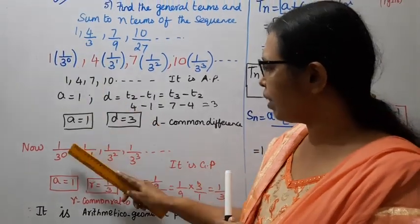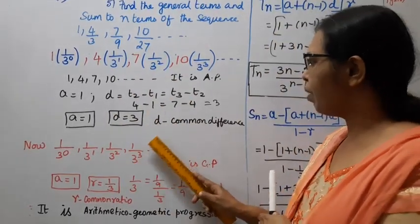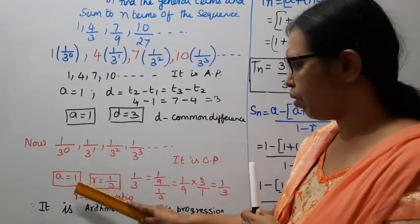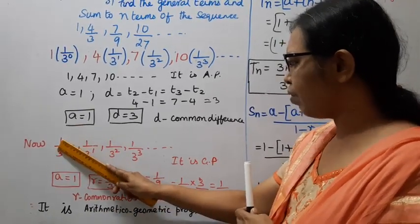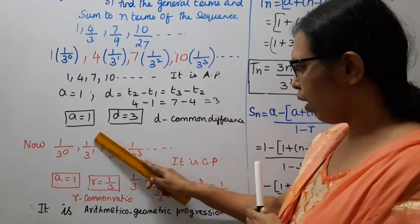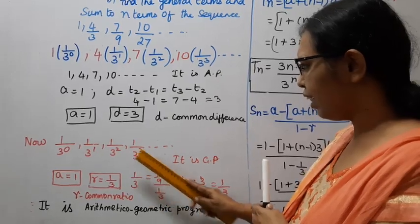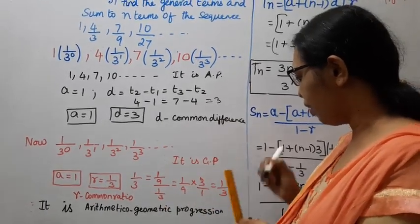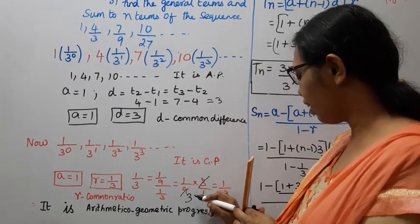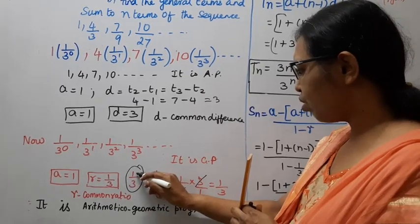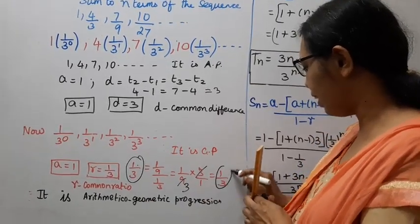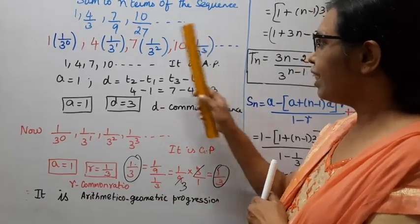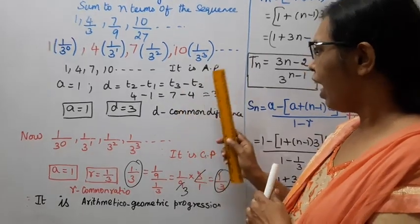The denominators 1, 1/3, 1/9, 1/27 form a GP. The first term a = (1/3)^0 = 1, and common ratio r = T2/T1 = (1/3)/1 = 1/3. Confirmed: it is a GP with r = 1/3.